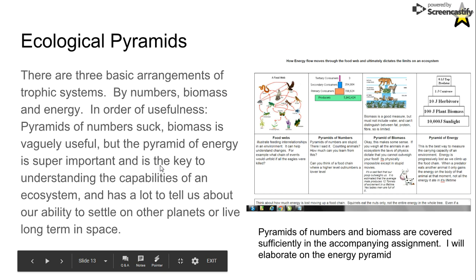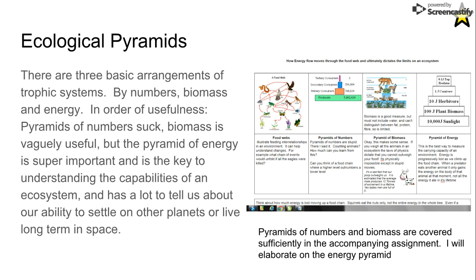Ecological pyramids, rather than building food webs which show interrelationships, try to look at what's going on at each level in terms of some quantifiable number. The first one, the pyramid of numbers, is the least useful. You'd expect deer to outnumber wolves and antelope to outnumber lions, so you should see fewer and fewer animals as you go up the trophic level. However, it doesn't always work because mosquitoes can outnumber their prey.